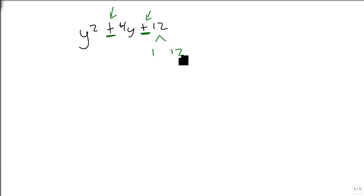We break our 12 down again: 1 and 12, 2 and 6, 3 and 4, and we add these all together. We get 13, 8, and 7. Because we don't find 4 in this list, this does not factor over integers.